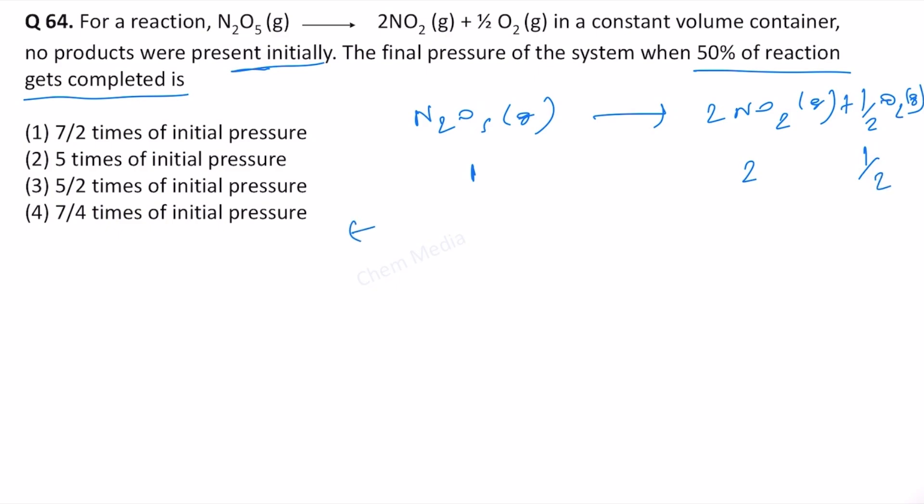However, when t equals 0, this is 1, this is 0, this is 0, because initially no products were there. That is what is mentioned in the question also.